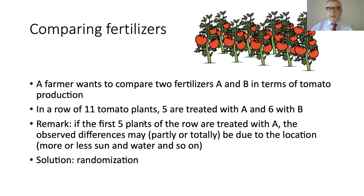I will take an example from the book. The issue is to compare fertilizers. We have a very educated farmer who knows statistics, and he wants to compare two fertilizers, called A and B, in terms of tomato production. He designs an experiment: a row with eleven tomato plants, five treated with A and six with B. The idea is to collect and weigh the tomatoes to understand which fertilizer is better.